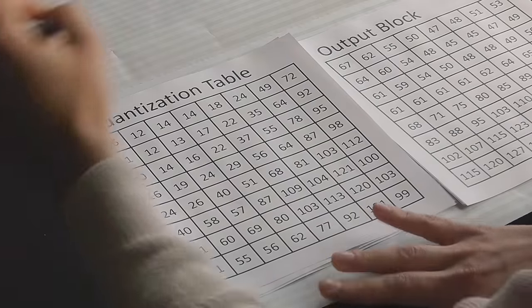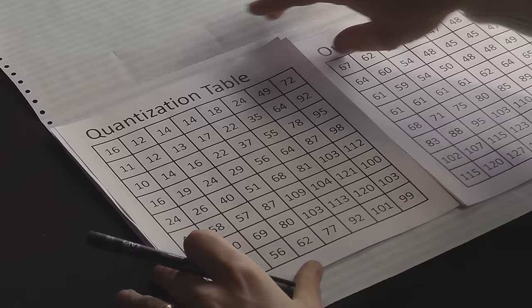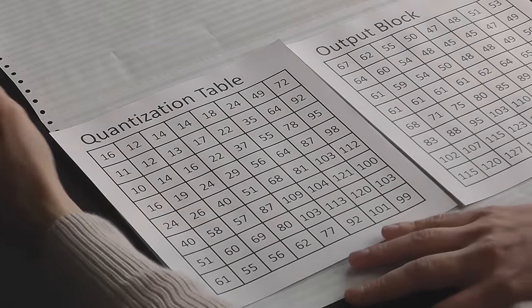They have a different one for chrominance, which has much higher penalties on the high frequency, because if high frequency data is not very important in gray, it's even less important given that we don't see color that well. One thing you can do to immediately increase the quality of our overall JPEG compression, that is preserve as much image as possible, is to halve all of these values in the quantization table.